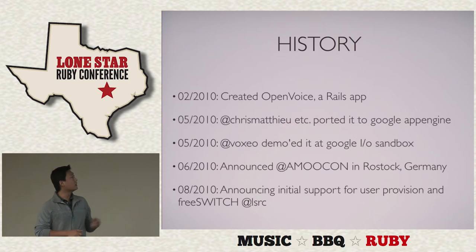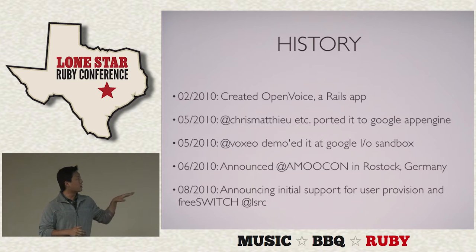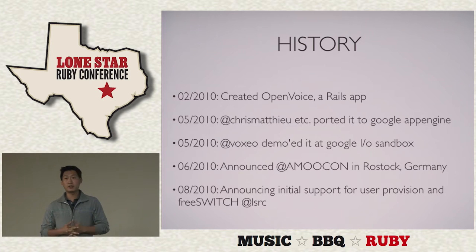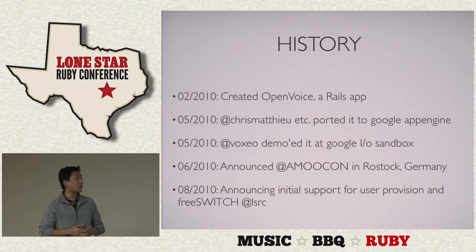Here's the history. I started in February and created a simple Rails app. Then in May, Craig Matthew, who was the former CEO of Telegaloo, ported it to Google App Engine. He and a few other people did a really good job — they spent about six to eight weeks to port it and got the basic functionalities working. Then in May of 2010, the company bought a sale and demoed it at the Google I/O Sandbox.